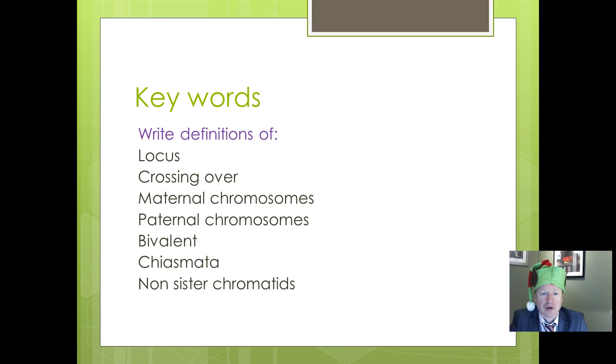Make sure you are clear on the meanings of all of these words: locus, crossing over, maternal and paternal chromosomes, bivalent, chiasmata, and the idea of non-sister chromatids.